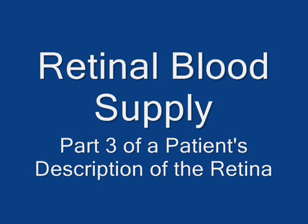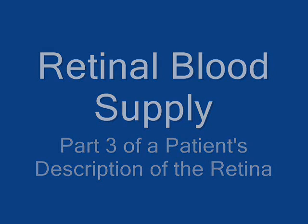To properly function, the retina must have oxygen, nutrients, and a way to dispose of its cellular waste. These needs are usually met by two circulation pathways serving the retina.